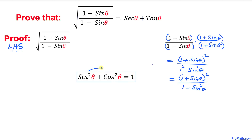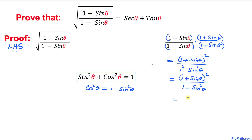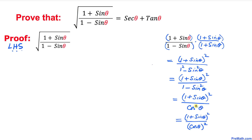Let's move sin² θ to the right hand side, so we get cos² θ = 1 - sin² θ. That means I can replace (1 - sin² θ) with simply cos² θ. So this becomes (1 + sin θ)² on top divided by cos² θ. This denominator cos² θ can be written as (cos θ)², so I can write the whole fraction as [(1 + sin θ) / cos θ] squared.